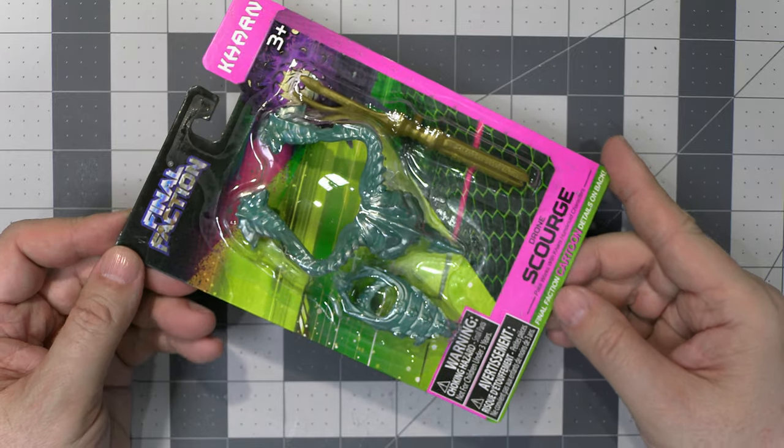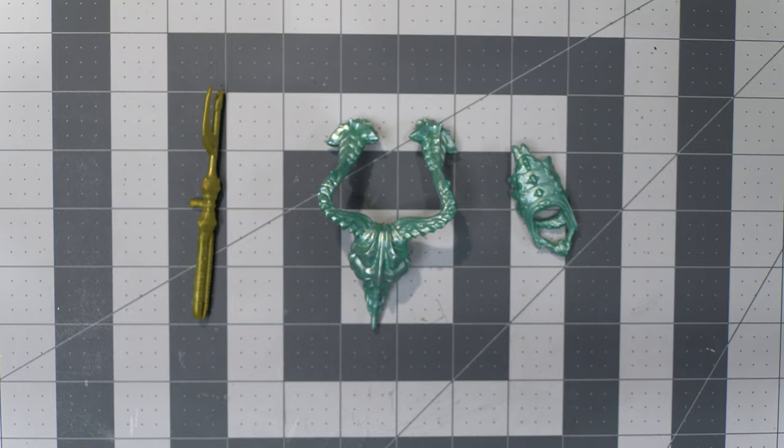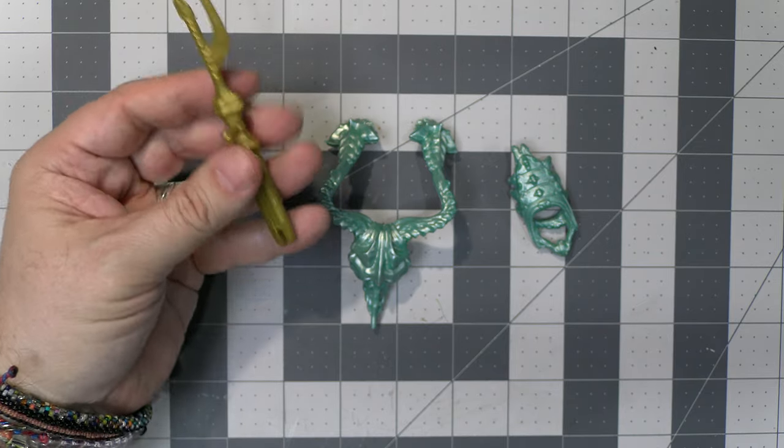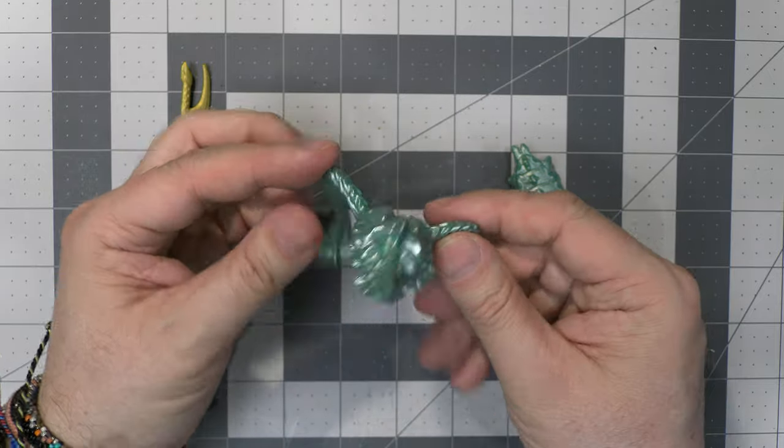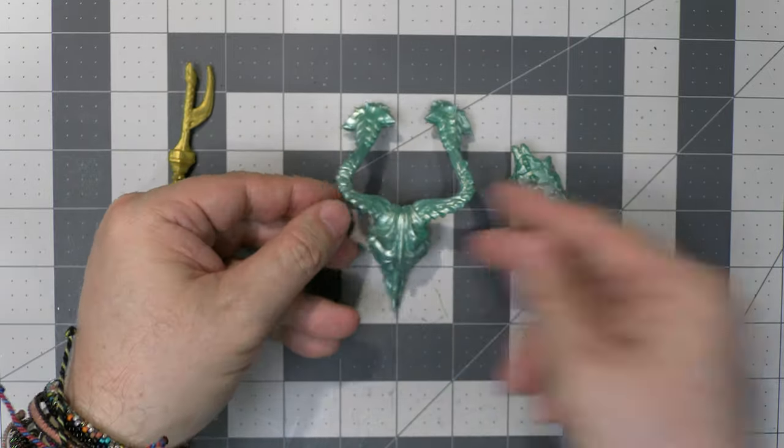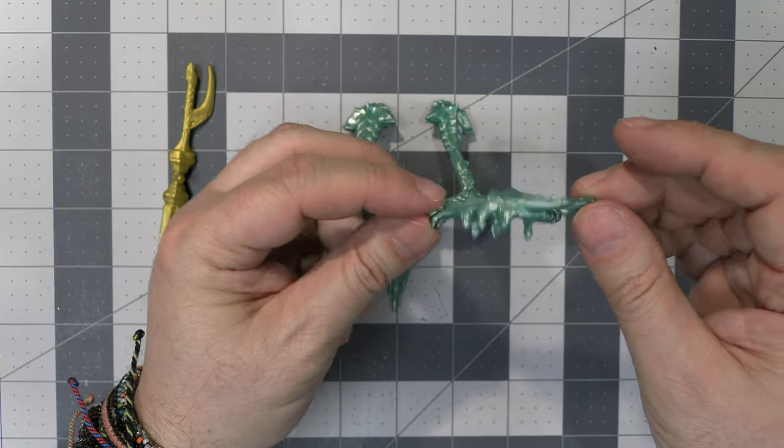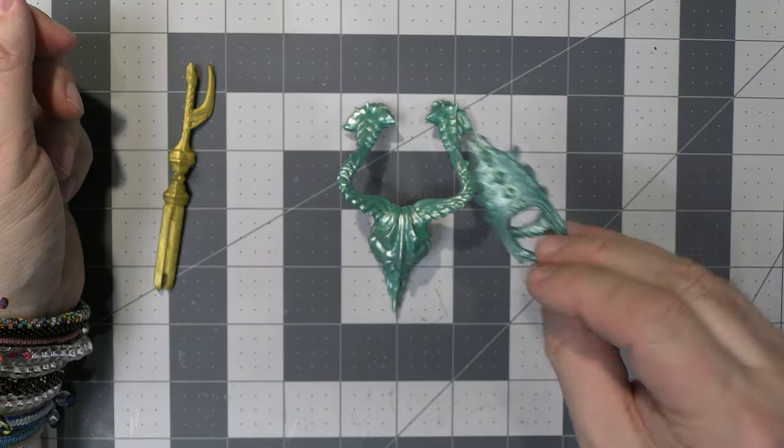And here we have more cool alien stuff. We got this weird weapon that can be used for so many things. Really cool. This backpack could be its own creature or used as some detail. Nice. And this shield could also be its own creature or some cool alien detail.